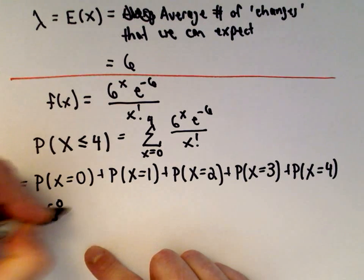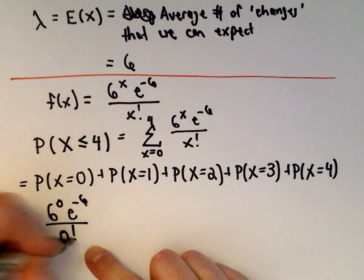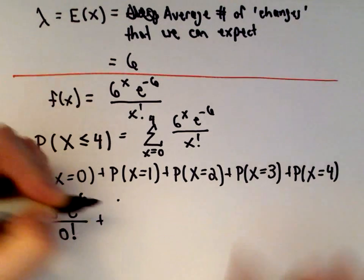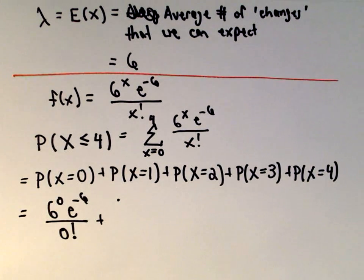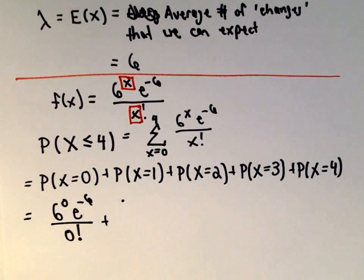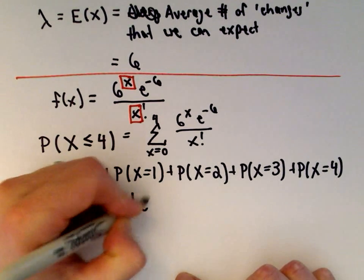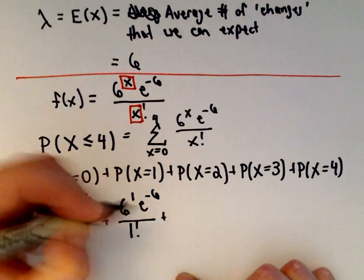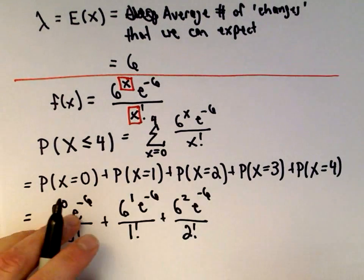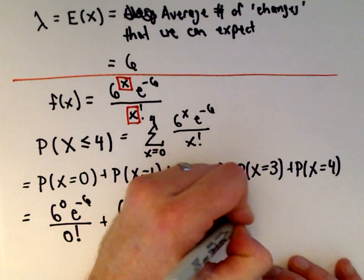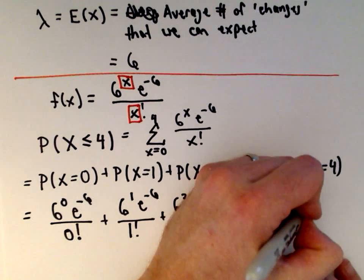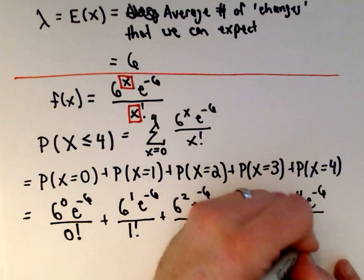Writing it out: (6^0 · e^(−6)) / 0! — recall 0! = 1 — plus (6^1 · e^(−6)) / 1!, plus (6^2 · e^(−6)) / 2!, plus (6^3 · e^(−6)) / 3!, plus (6^4 · e^(−6)) / 4!. The only things changing are the exponent on the 6 and the factorial in the denominator.